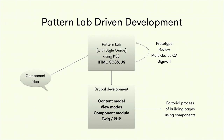This leads to what we call our pattern lab driven development. When we start building our components — say a quote block — we build it inside the pattern lab using HTML, Sass and JS, and then iterate until we're happy. We do a series of review processes: multi-device QA, sign-off. All these things can happen without doing that within the Drupal site — that's a major win because this process is so much faster. Then we move on to the Drupal development stage where we work on our content model, view modes, put logic inside a component module, work on the Twig template and potentially some pre-processing in PHP, before it's shipped off to the final site where the editorial team will start reusing it on all their different pages.